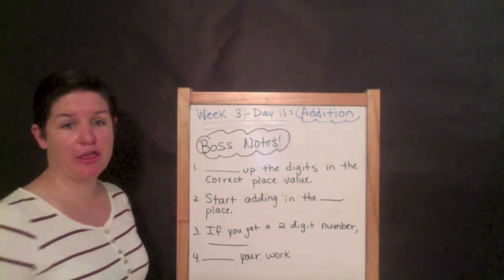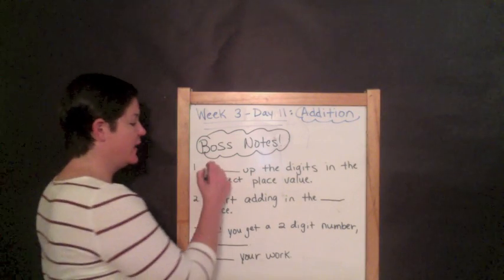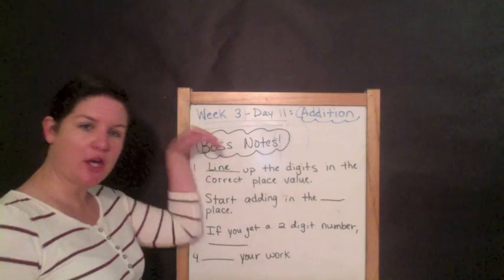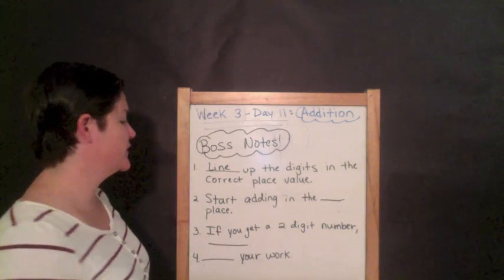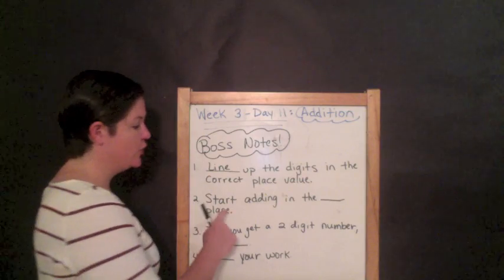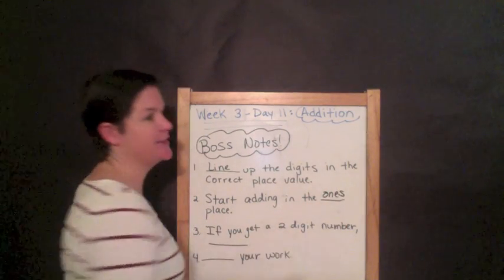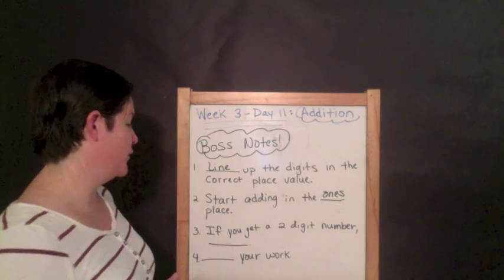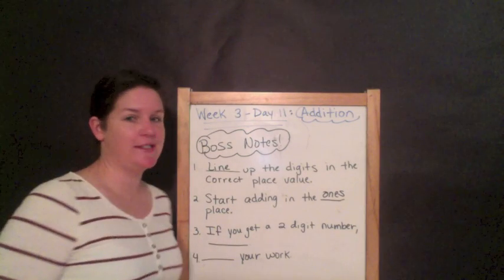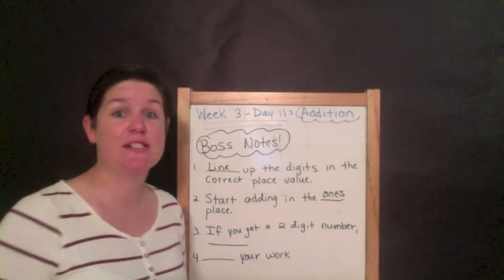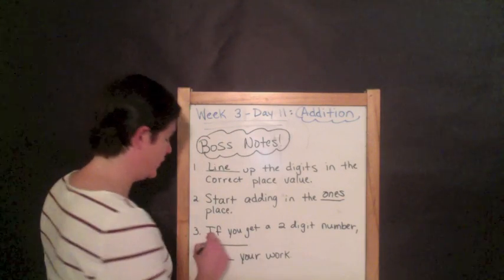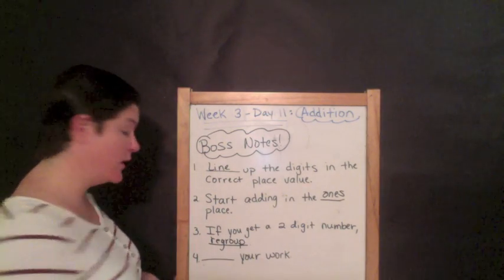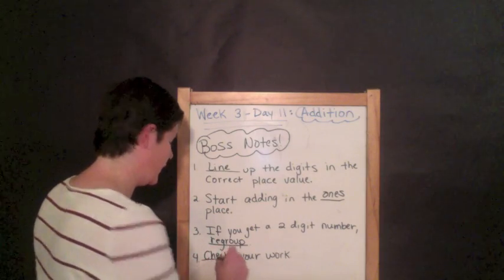Step one for addition in third grade. You are going to line up the digits in the correct place value. Line up the digits. We're going to put all the ones in the ones place, all the tens in the tens place, all the hundreds in the hundreds place, maybe even thousands. You're going to start adding in the ones place first. A lot of kids like to start in the hundreds place. No, you start from the ones and you work your way over. Step three, if you get a two-digit number, let's say like for instance you have nine plus eight which is seventeen, seventeen is a two-digit number, you would then have to regroup. And step four, check your work. You need to check your work. So let's get going.